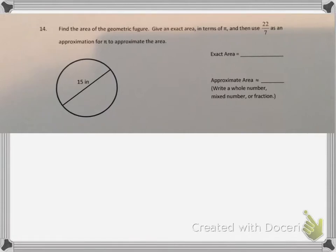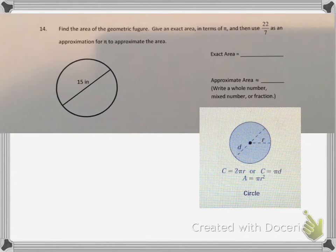We have a circle, and we need to find the area of the circle. So if we look on our geometry formula sheet, we will use the formula A equals pi r squared.